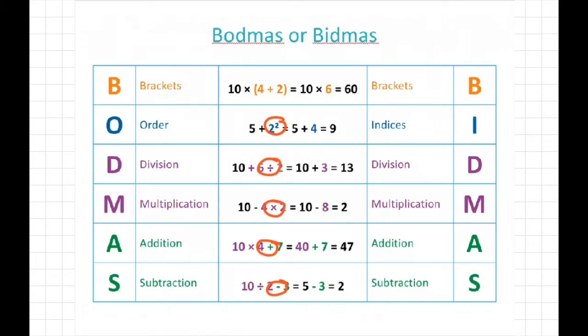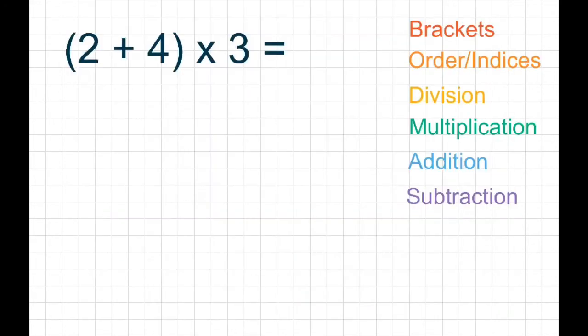So let's have a look at some examples. In this first example here, we have a sum that says 2 add 4 times 3. Now, I've also put a list of our BODMAS rules at the side, and we're going to work through them step by step. So brackets, first of all, we have a set of brackets. So we do whatever is in the brackets first. So 2 add 4 gives us 6.